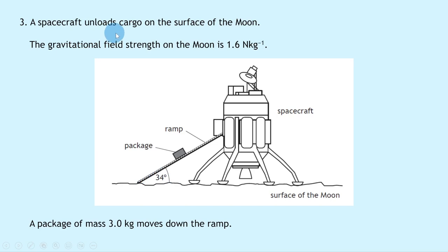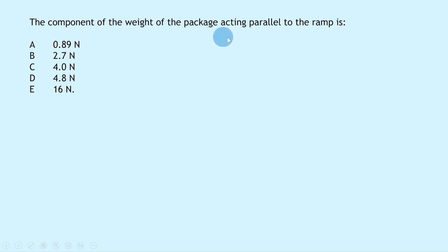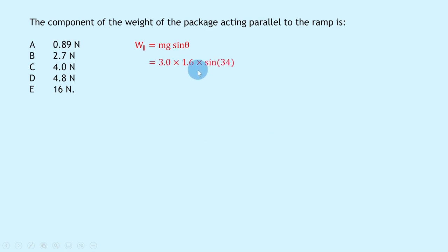Question 3: A spacecraft unloads cargo on the moon, where gravitational field strength is 1.6 N/kg. A package of mass 3.0 kg moves down a ramp at 34° to the horizontal. The component of weight acting parallel to the ramp is found using mg sinθ. So W_parallel = 3.0 × 1.6 × sin34°, which gives 2.7 N — option B.